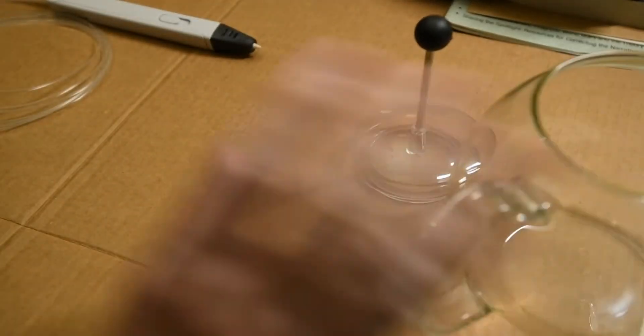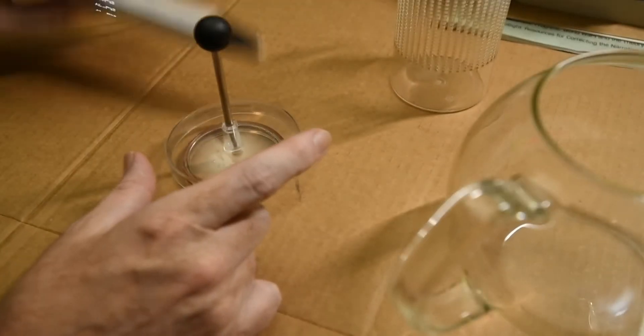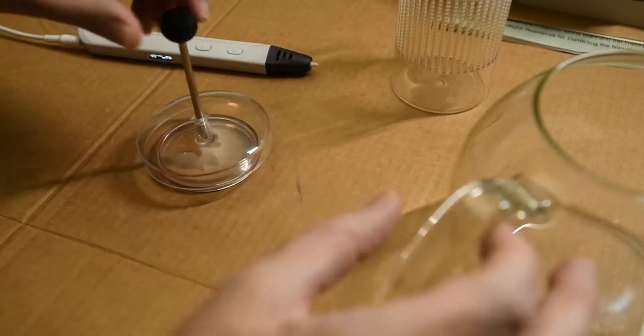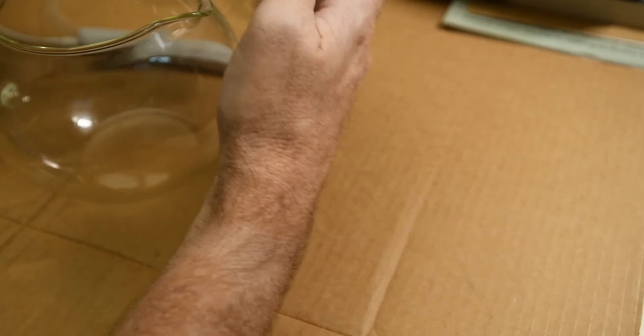Okay, so we're going to fix a broken piece of plastic with the 3D pen. This is a teapot and basically there's like a little infuser part here that has a plastic tab that's broken off right there.